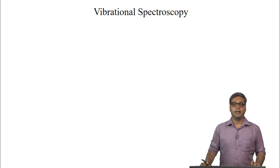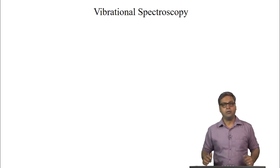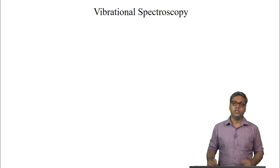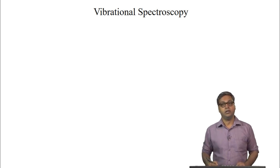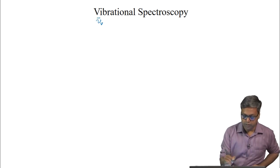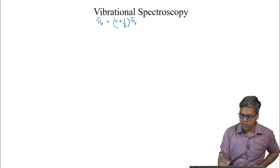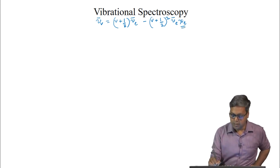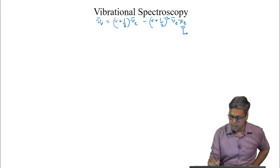Hello everyone. In the last lecture we discussed anharmonicity and how anharmonicity affects vibrational energy levels. The energy of an anharmonic vibrator associated to the vibrational quantum number V is given by nu-bar_V equals (V + 1/2)nu-bar_E minus (V + 1/2)² nu-bar_E chi_E, where chi_E is the anharmonicity constant.